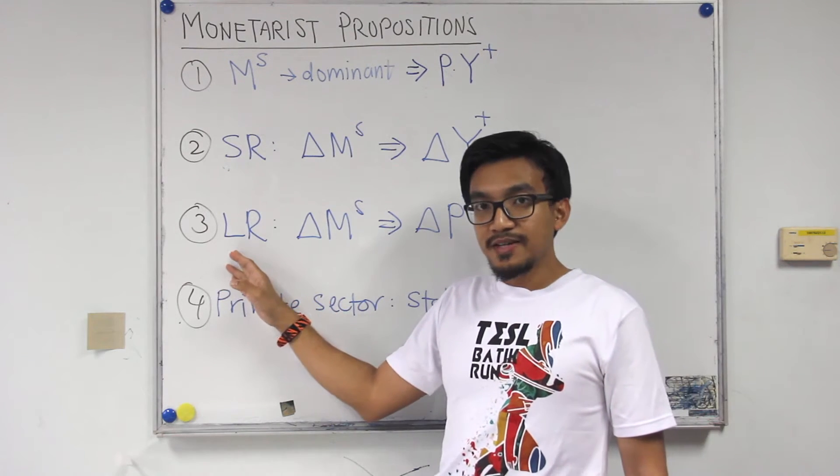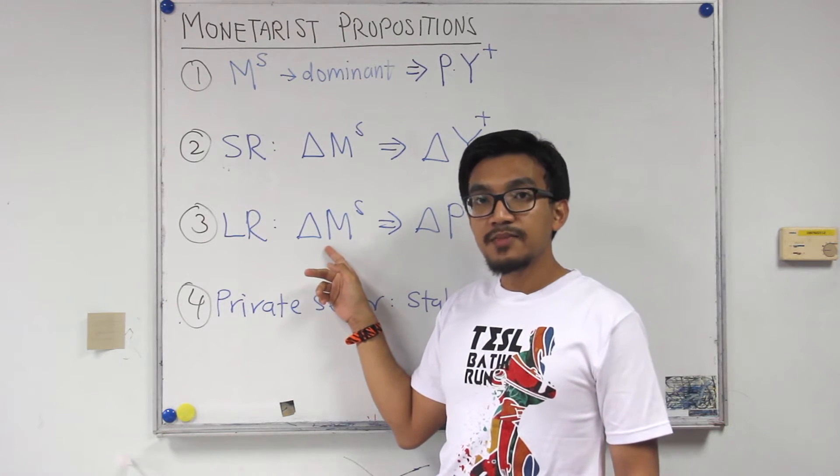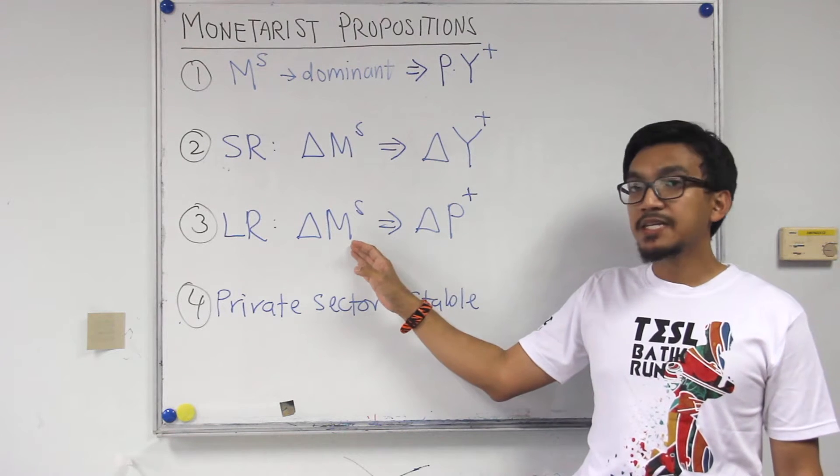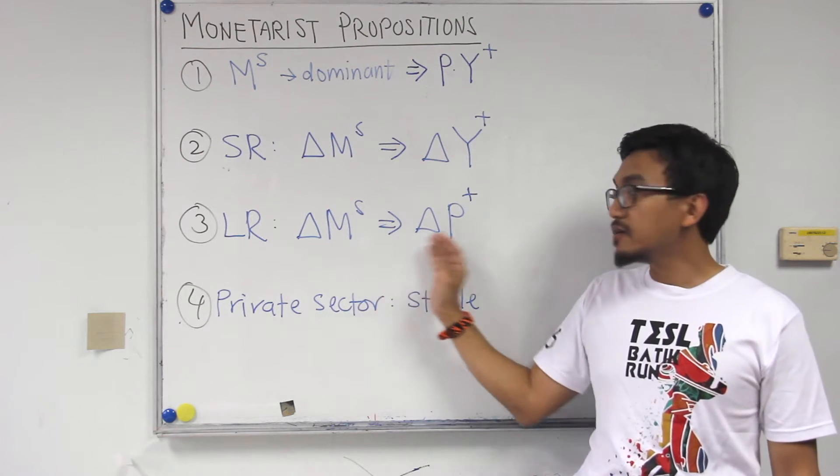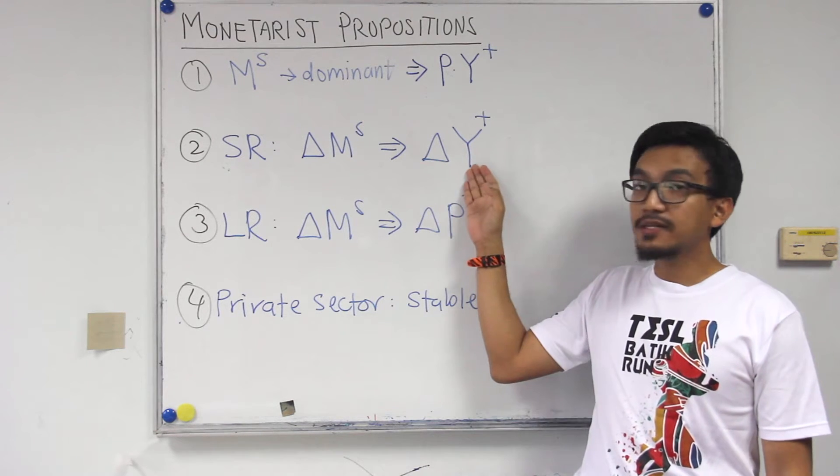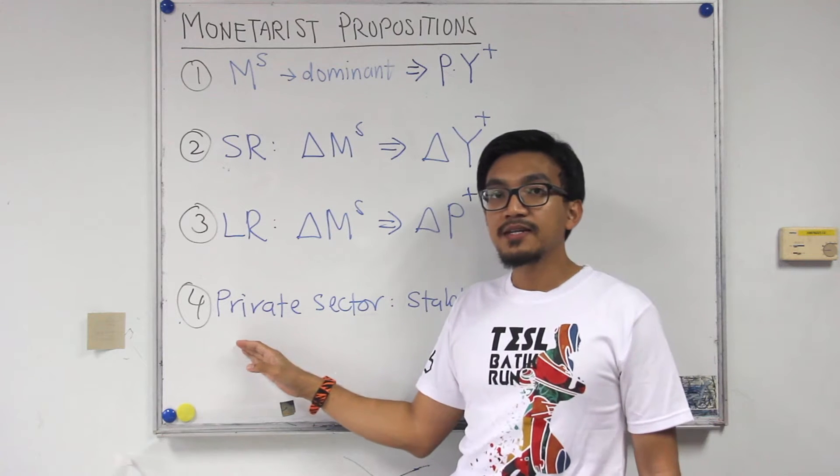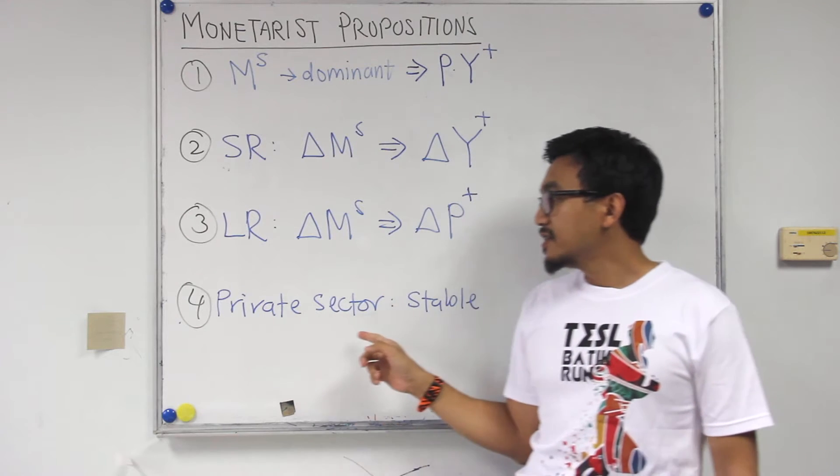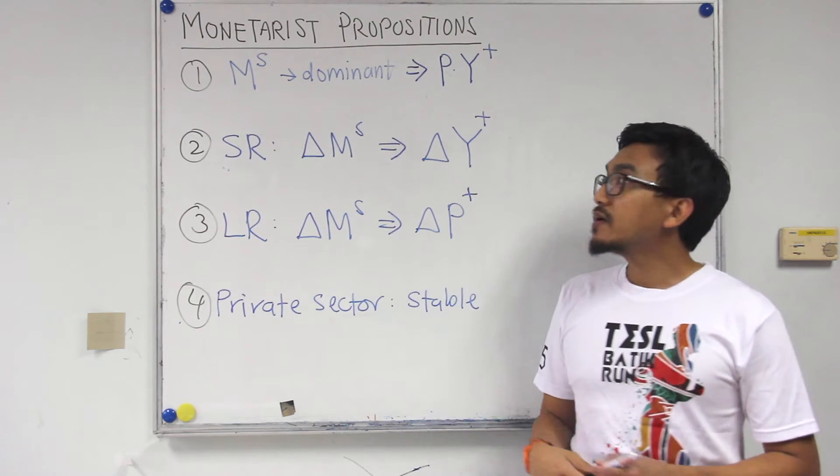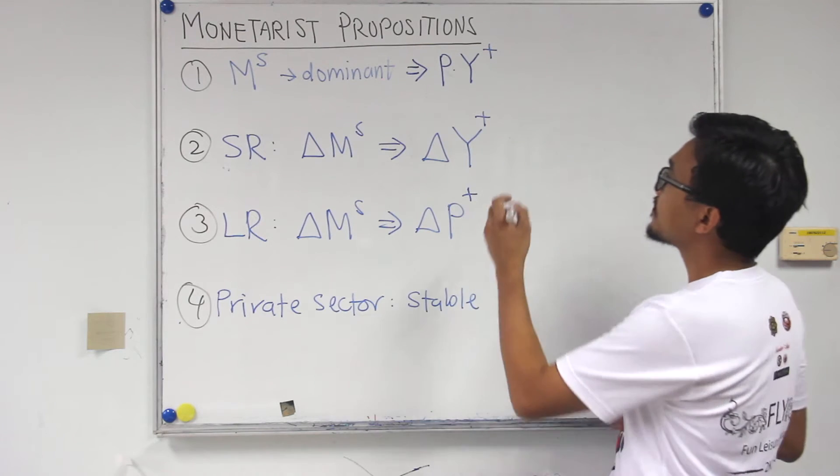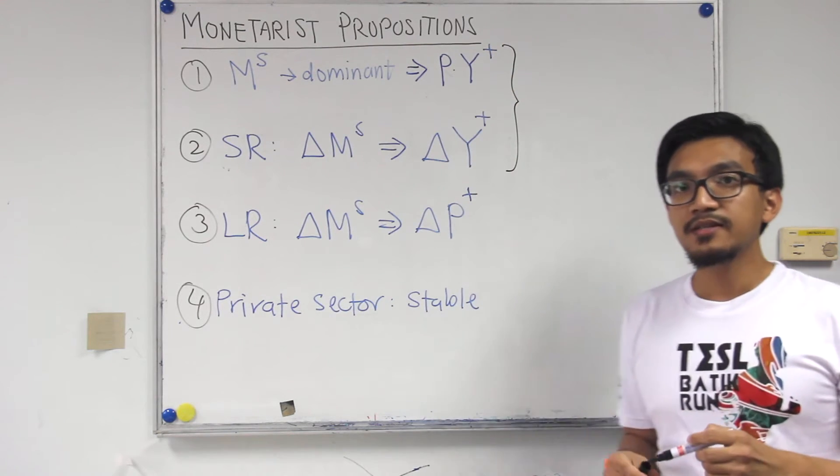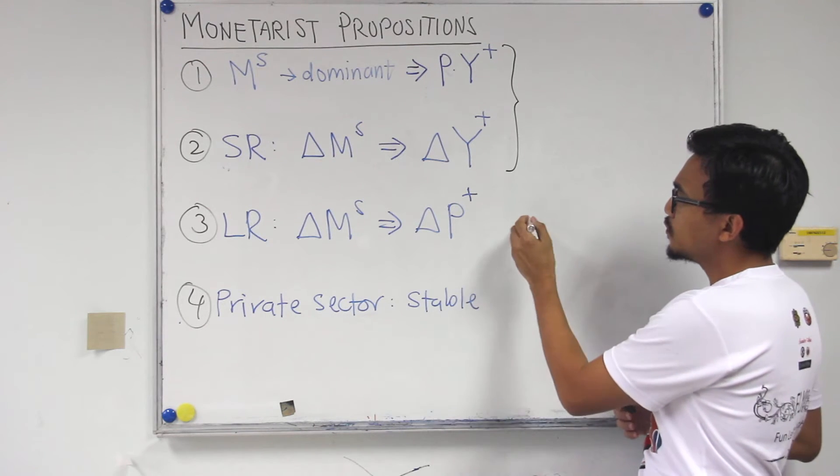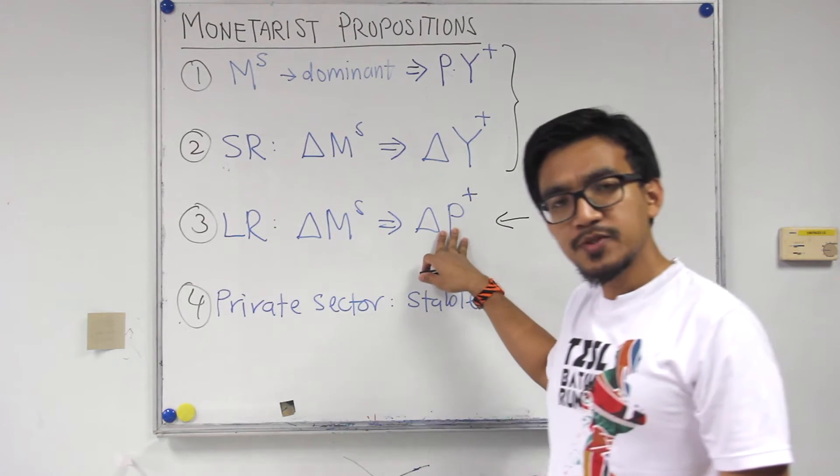However, in the long run, a change in money supply will only have impact on nominal variables. So if money supply keeps on increasing in the long run, it will only increase prices but not the real variables. And number four, finally in opposite to the Keynesian view, the monetarists believe that private sector is actually stable. So we have actually discussed these two propositions in detail last week in our meeting. So what we're going to do next will be to move on to proposition number three.